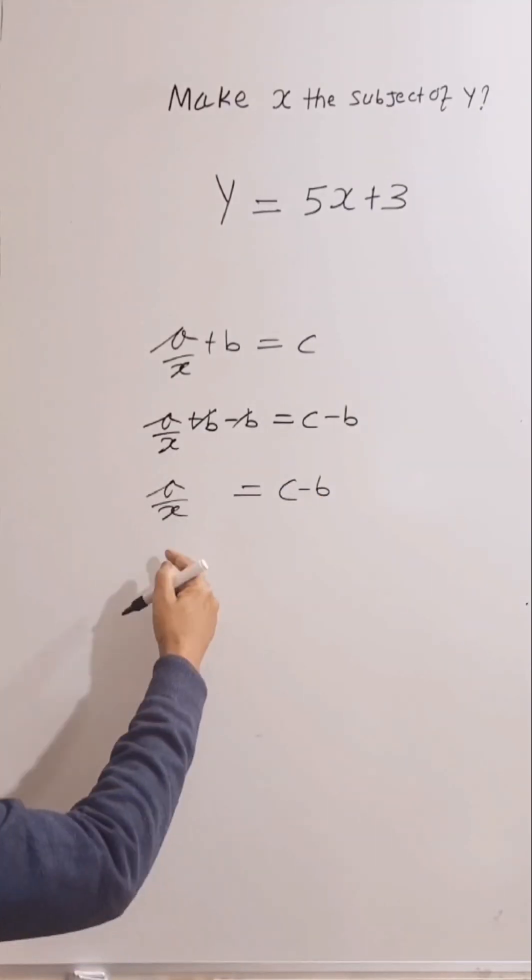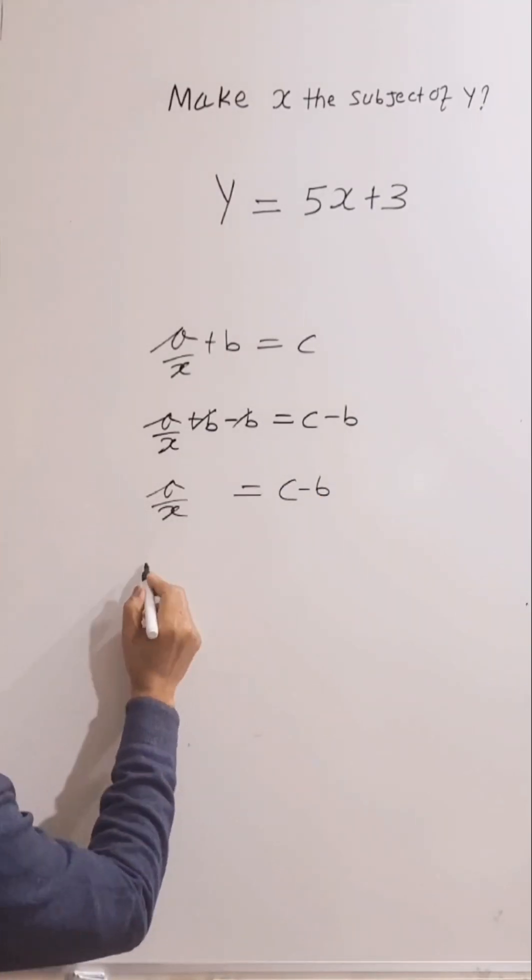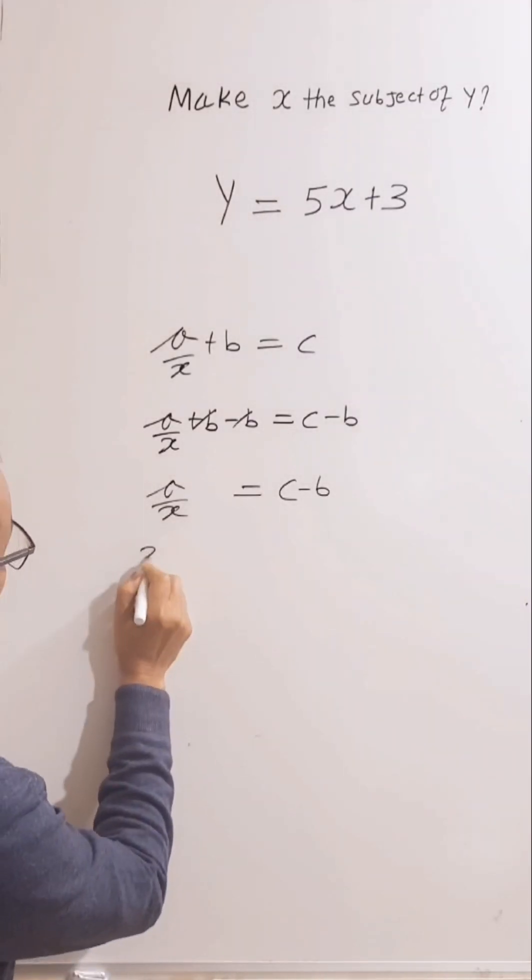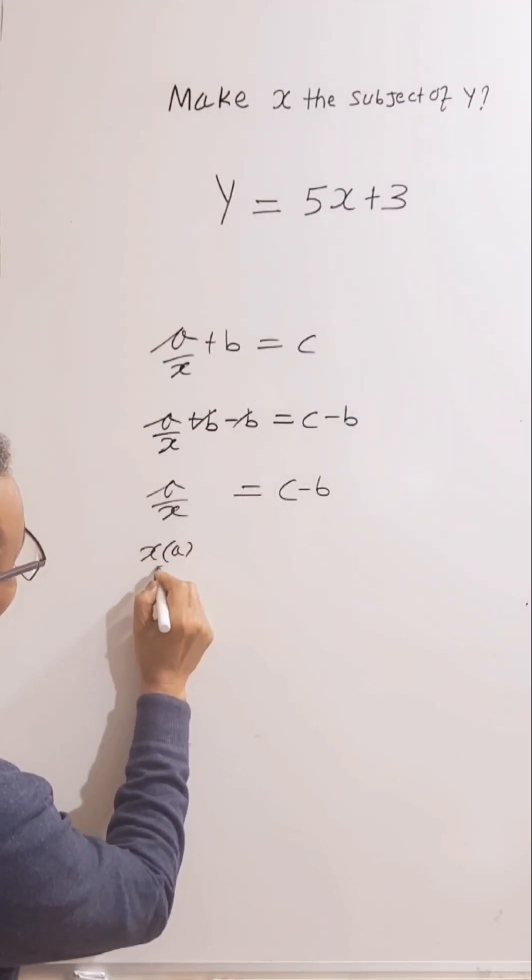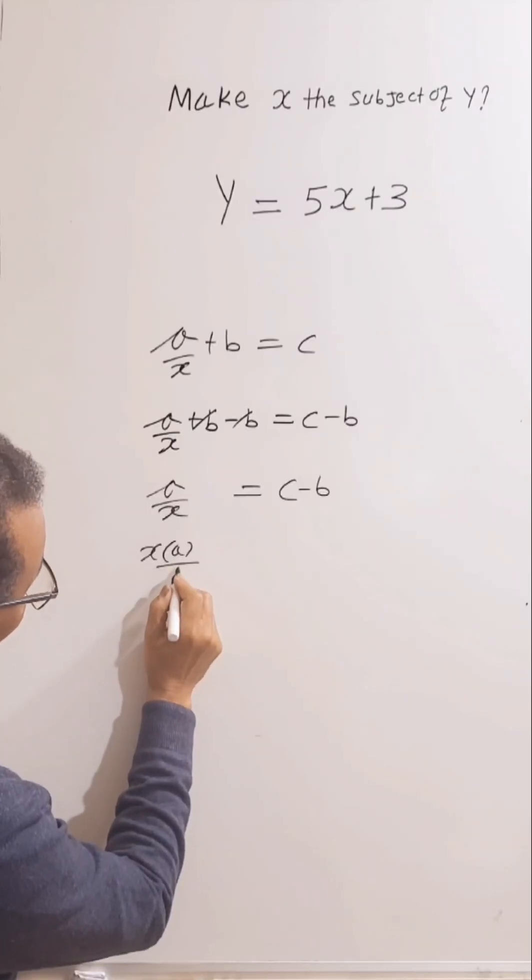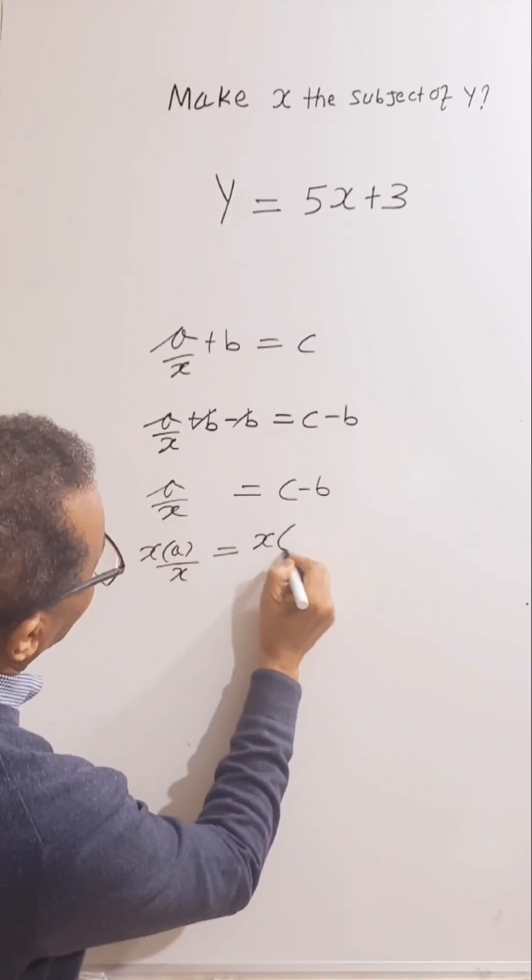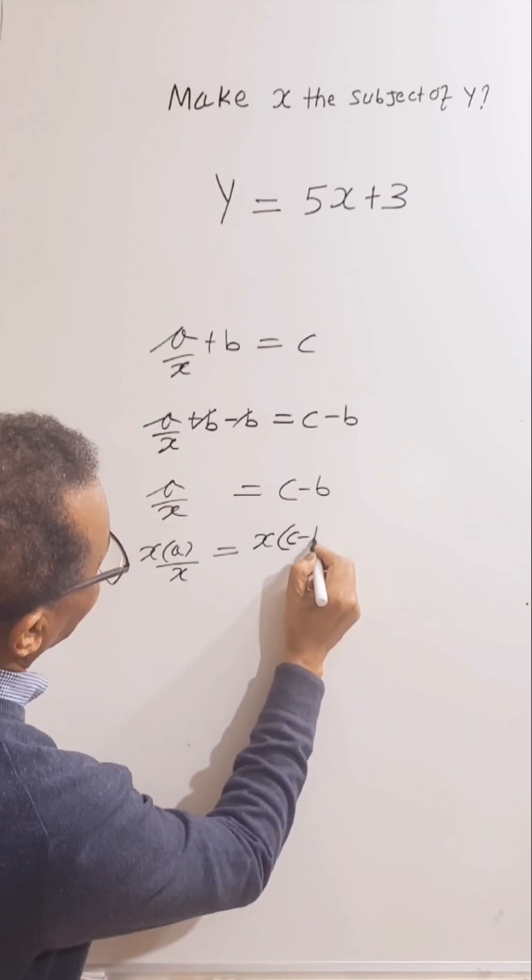Let's multiply both sides by x. So x times A over x, equal x times C, take away B.